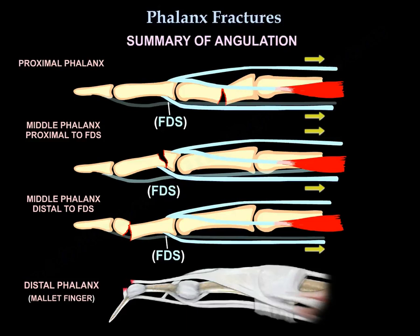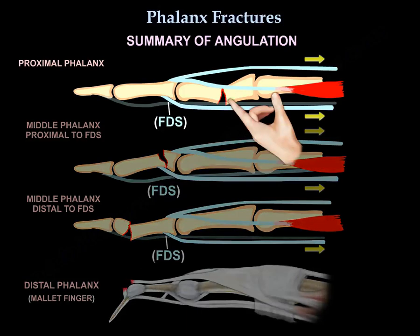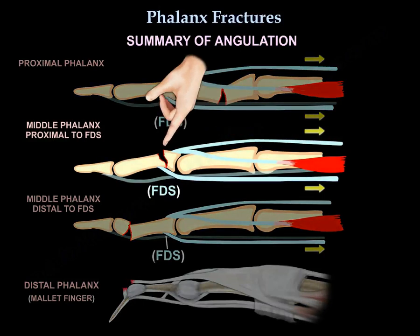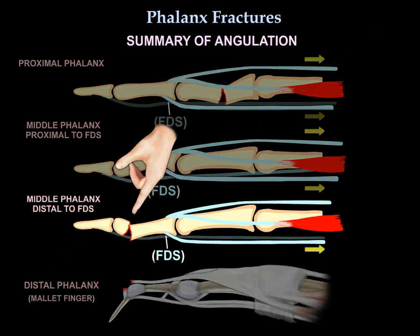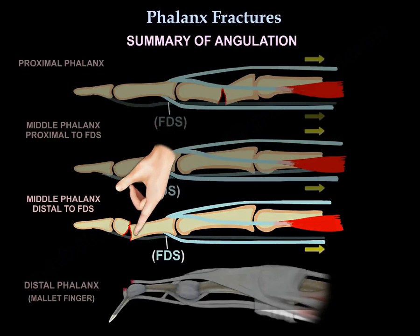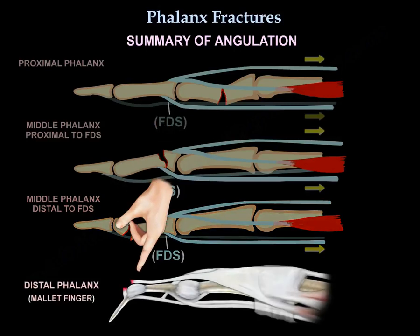Here is a summary of the angulation of phalanx fractures: in the proximal phalanx the angulation is volar; in the middle phalanx with the fracture proximal to the superficialis insertion the apex is dorsal; in the middle phalanx with the fracture distal to the superficialis insertion the apex is volar; and in the distal phalanx there is a mallet finger deformity.